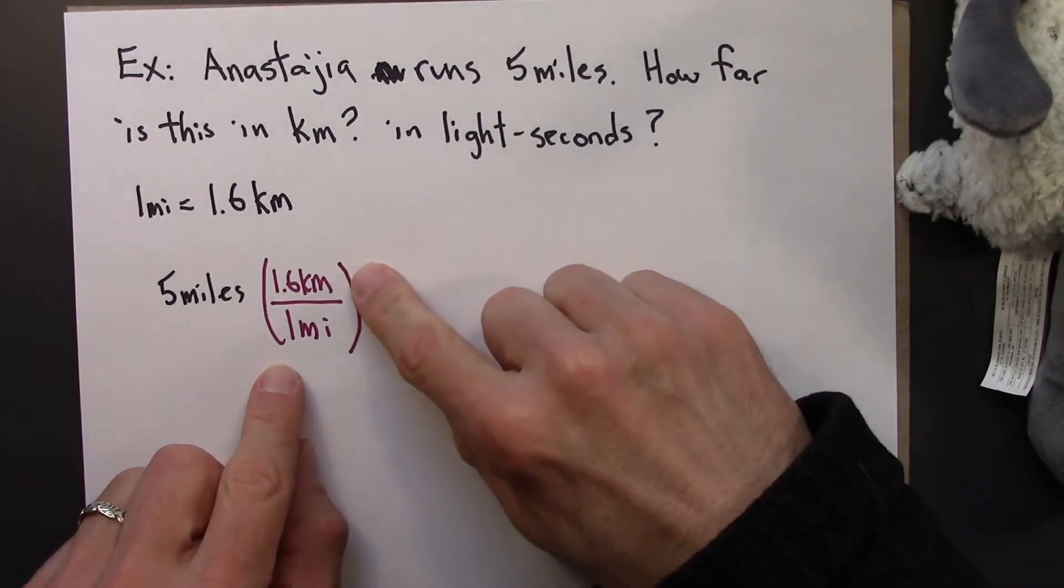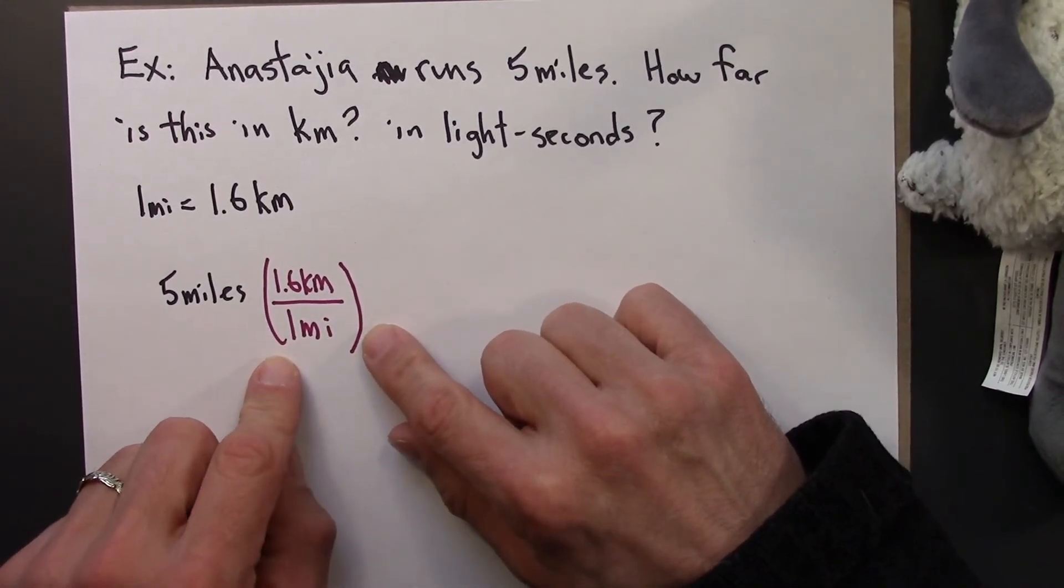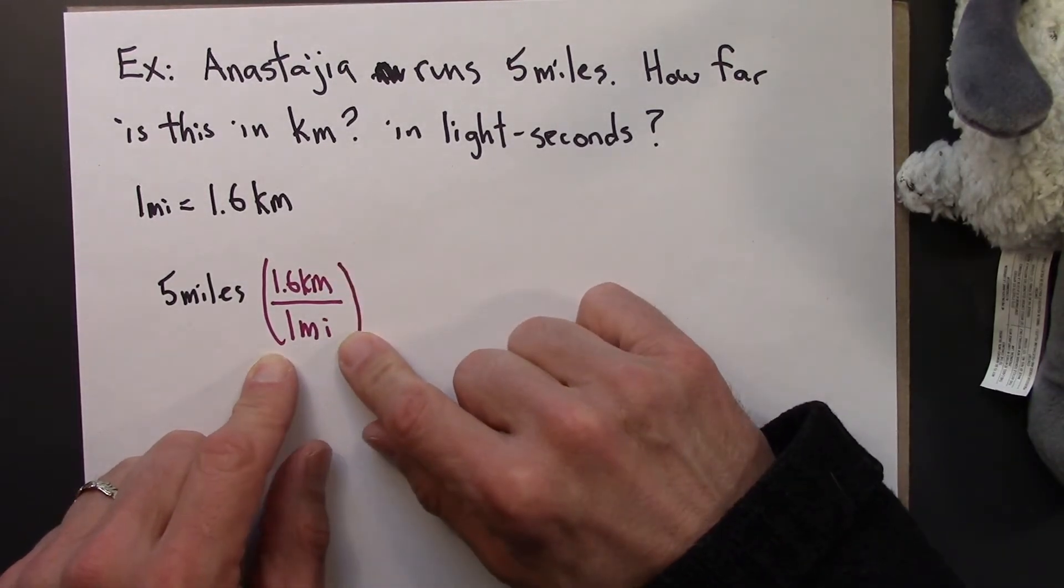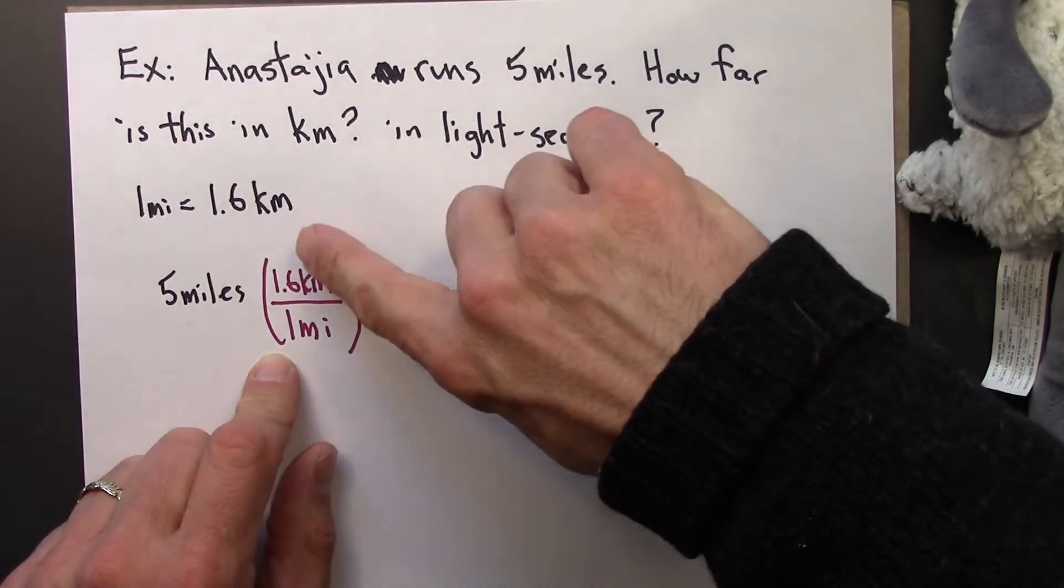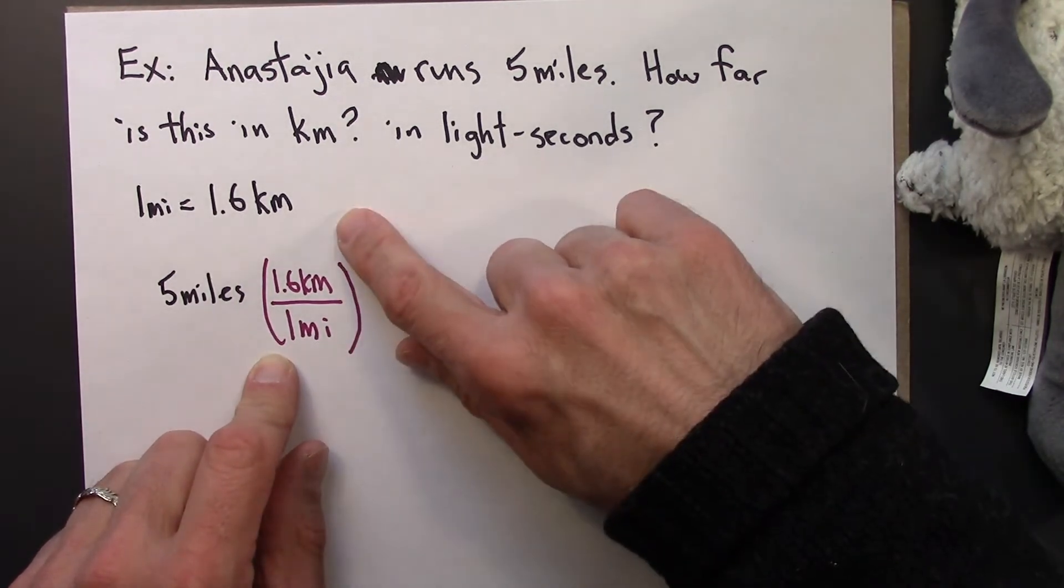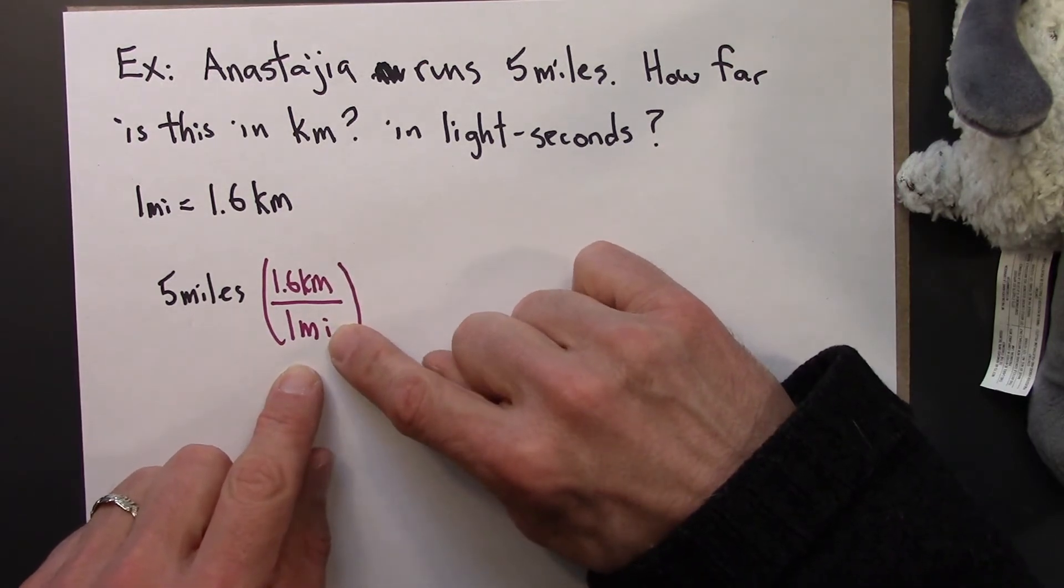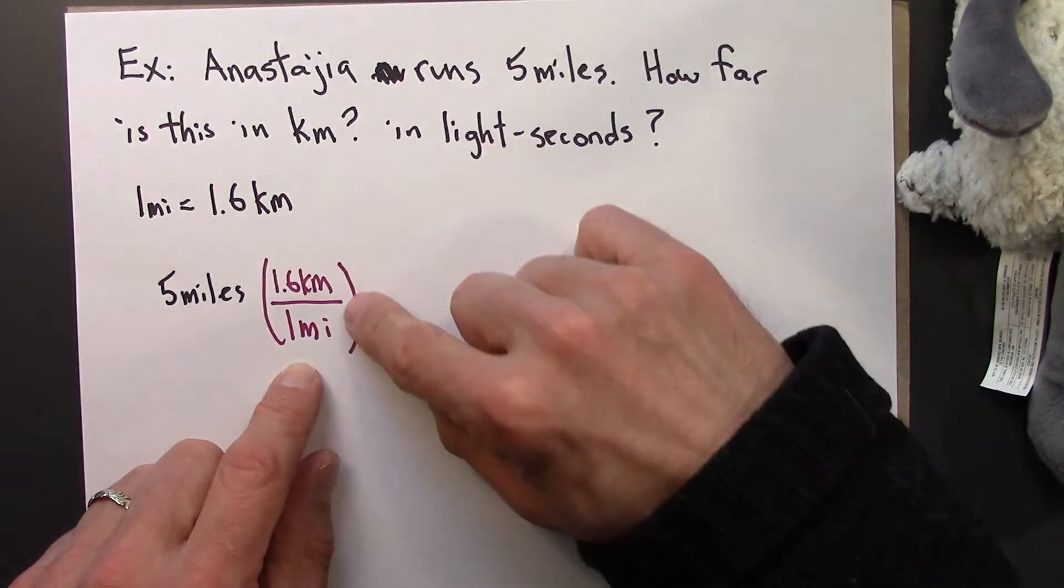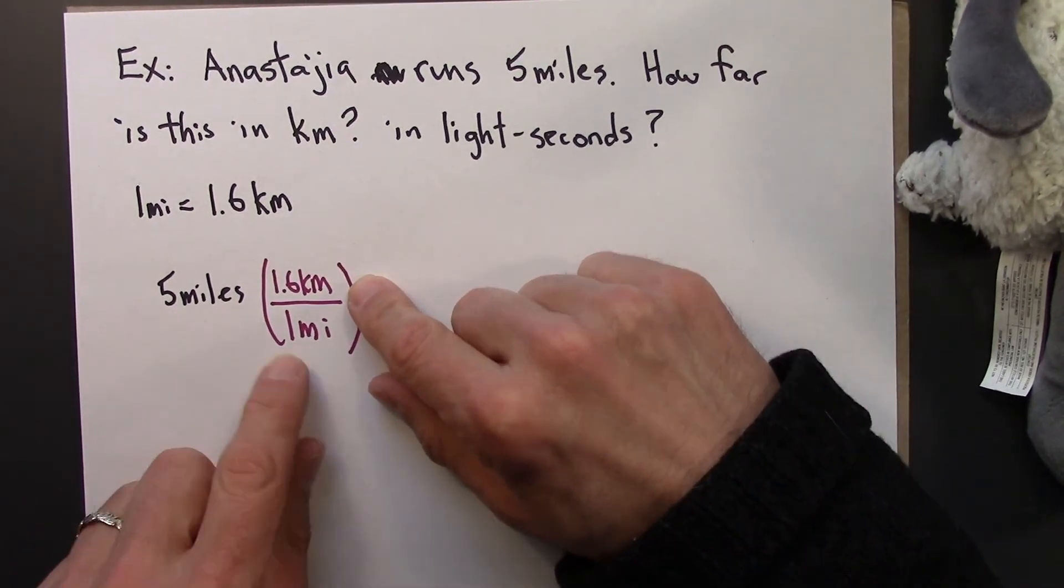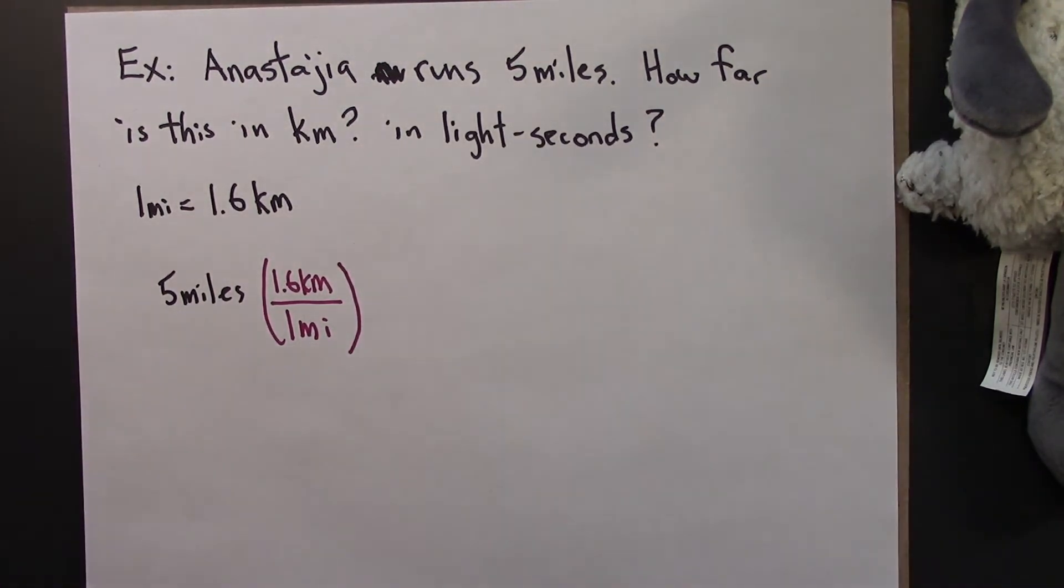So, this conversion factor here is 1 in disguise. What I mean by that is, here's a fraction, the same thing on top as is on the bottom. They're written in different ways, but they're equivalent. 1.6 kilometers is equal to 1 mile. So this term in parentheses is just 1. So it's going to change the units for this 5 miles, but it's not going to change the value or meaning of this.